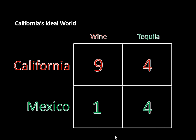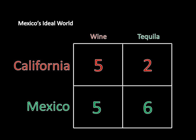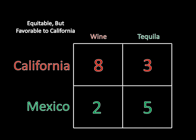It could be the opposite: instead of California getting the entire surplus, Mexico gets the entire surplus. California is down to five bottles of wine and two bottles of tequila — like a world without trade — while Mexico gets four extra bottles of wine and two extra bottles of tequila, for six bottles of tequila total. That's Mexico's ideal world. There could also be an equitable distribution where the sides split the surplus evenly, resulting in California getting seven bottles of wine and three bottles of tequila, and Mexico getting three bottles of wine and five bottles of tequila. Or there could be slightly favorable distributions to either side.